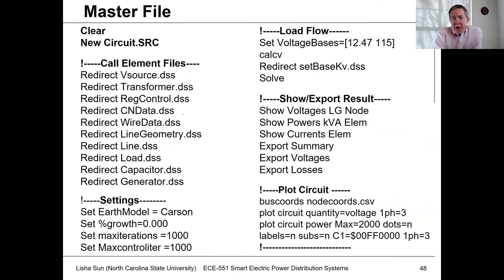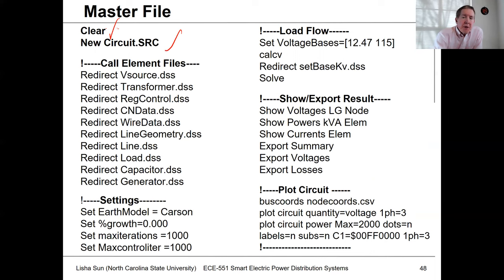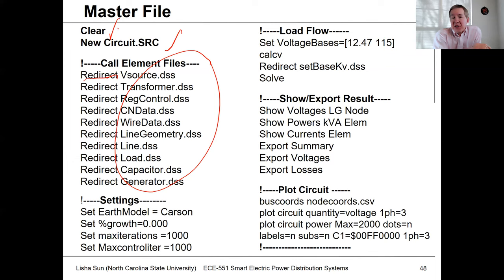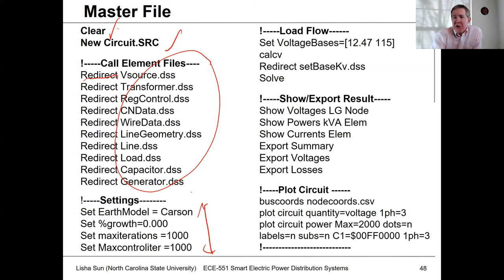This is what the master file looks like once we've cleaned it up a little bit. You're creating the new circuit: start off by clearing the distribution system simulator memory, then you pull all these files in using the redirect command. Redirect basically sucks all these files in along with all their content. Then you can do some basic settings — there's a lot of things you could set within OpenDSS if you look at the help documentation, but mostly you stick with the defaults.